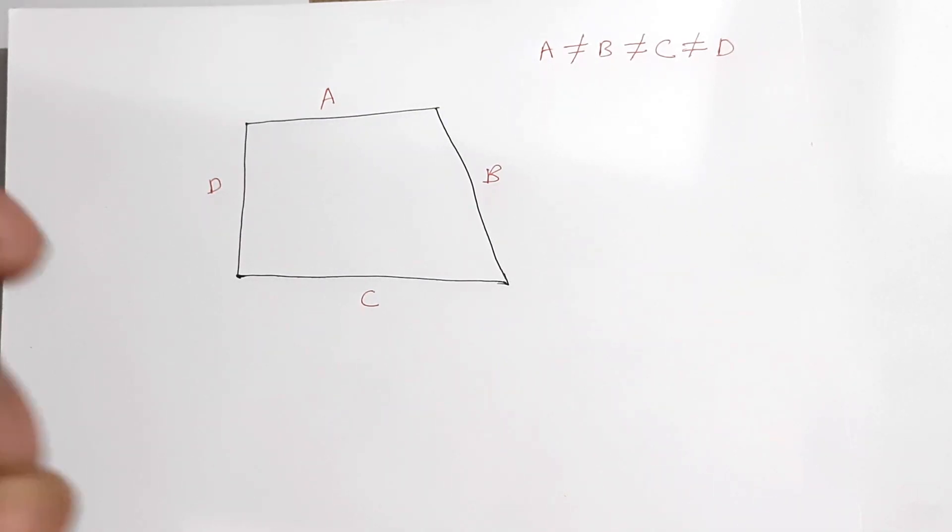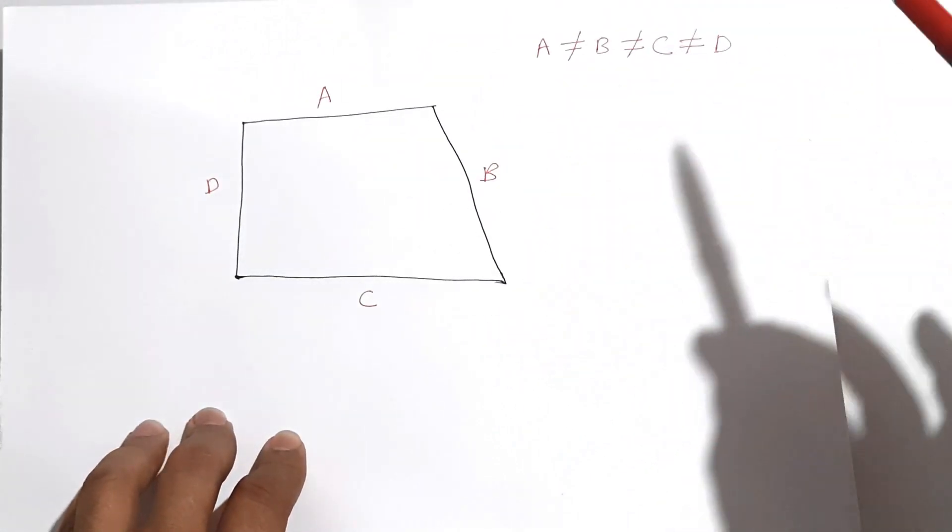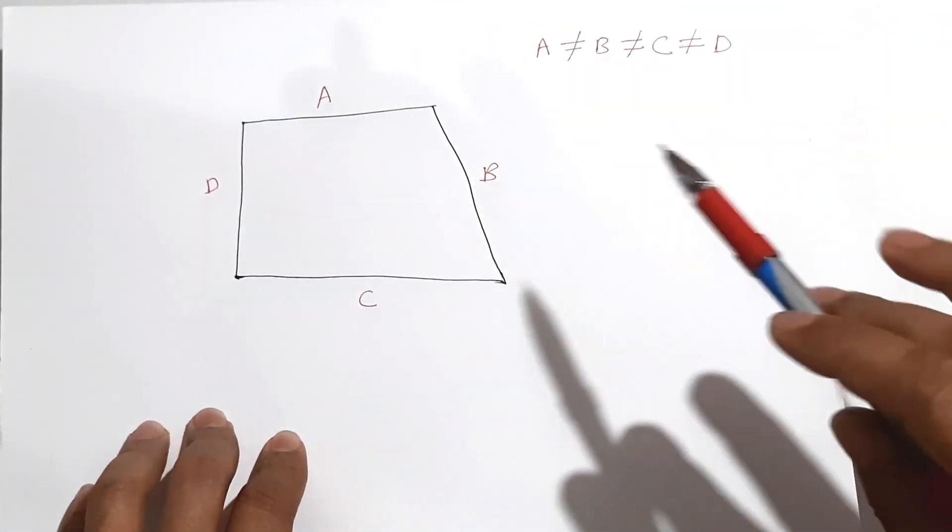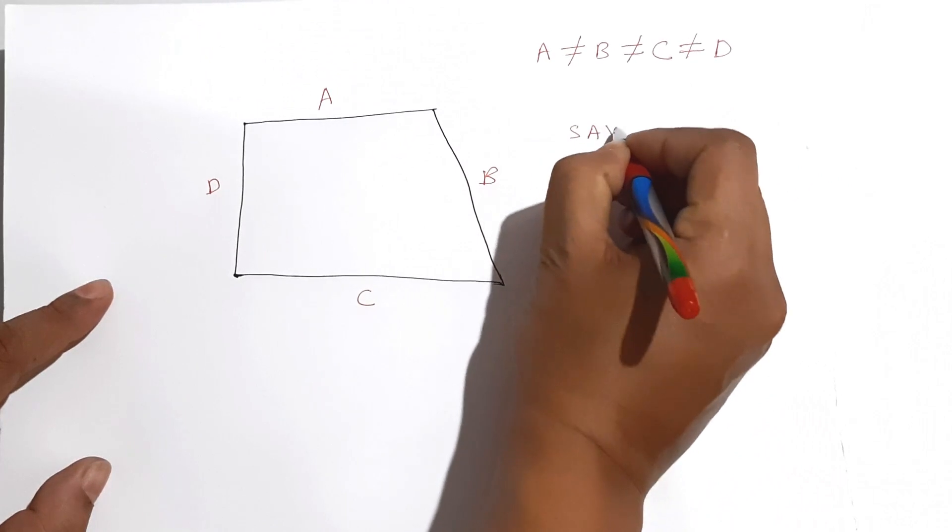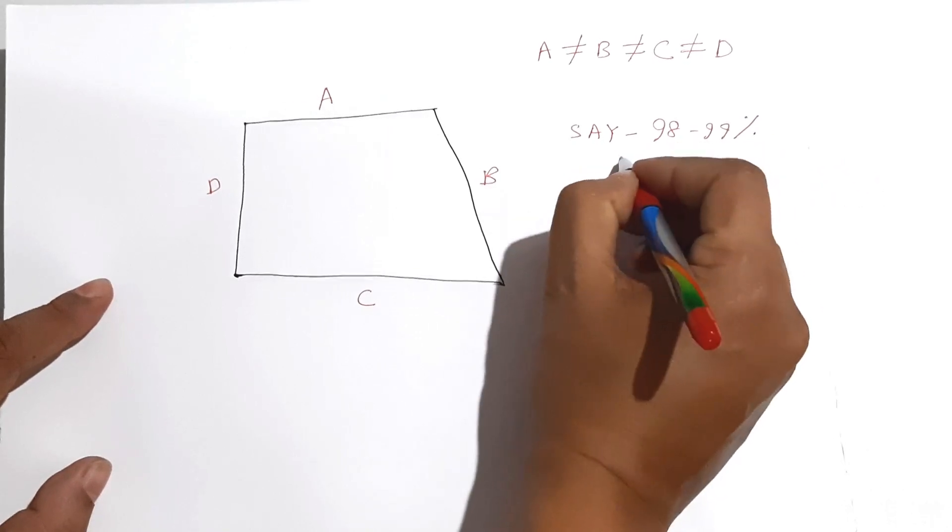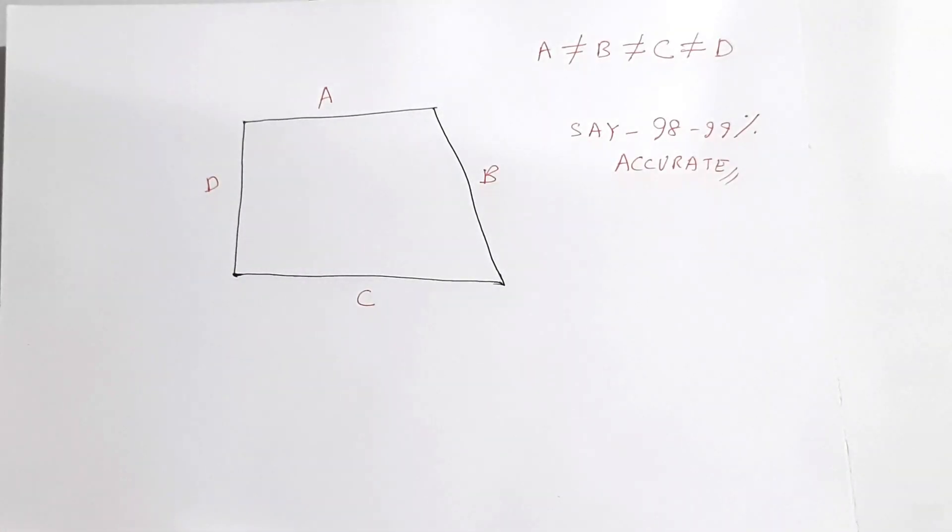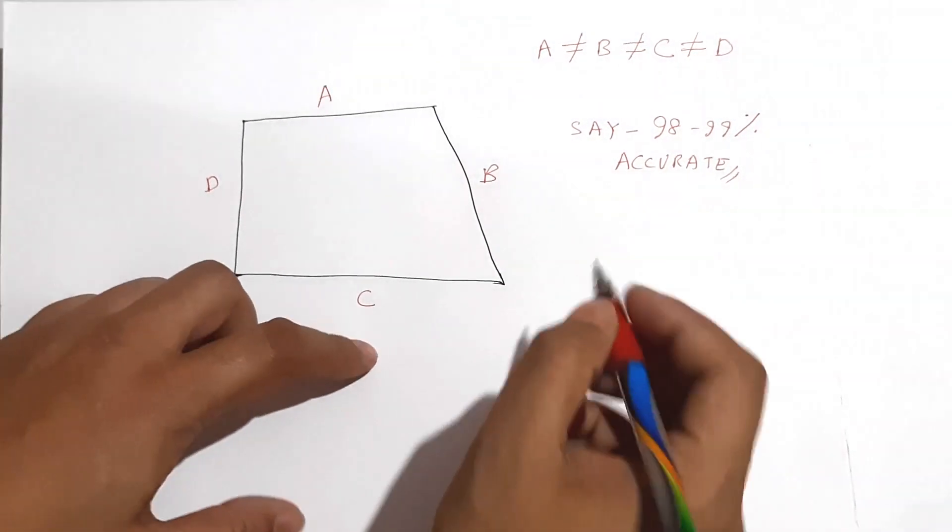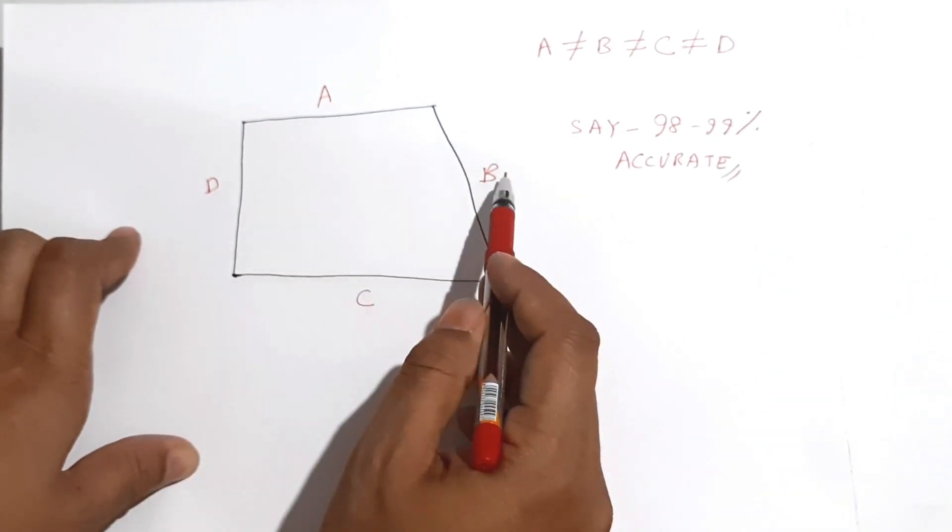I tell you the simple easy process now. If you want to calculate the exact square feet, then you have to go through lots of math formula. But if you want say 98 to 99 percent accurate, you can do it in a very simple way.